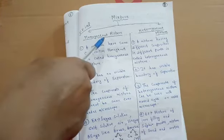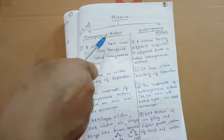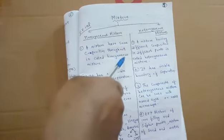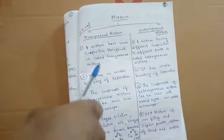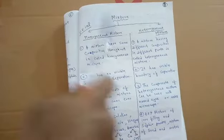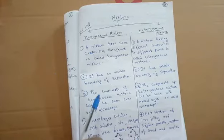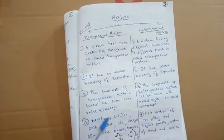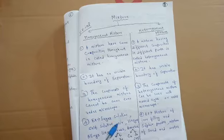So three points to remember about a homogeneous mixture: first, it has the same composition throughout; second, there is no visible boundary of separation; and third, the components of a homogeneous mixture cannot be seen even under a microscope.